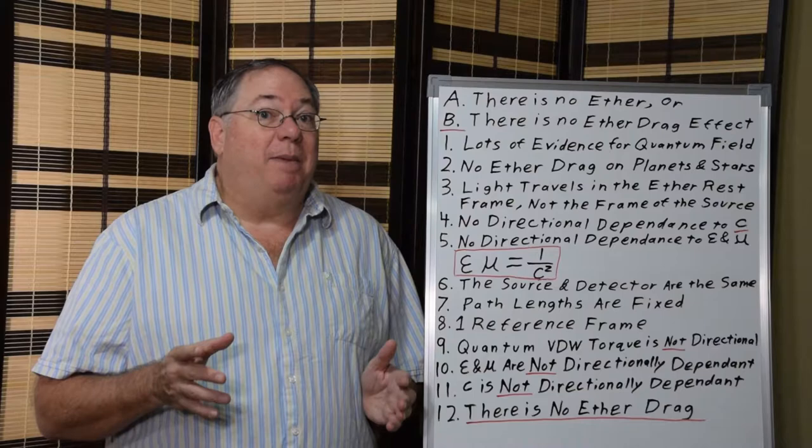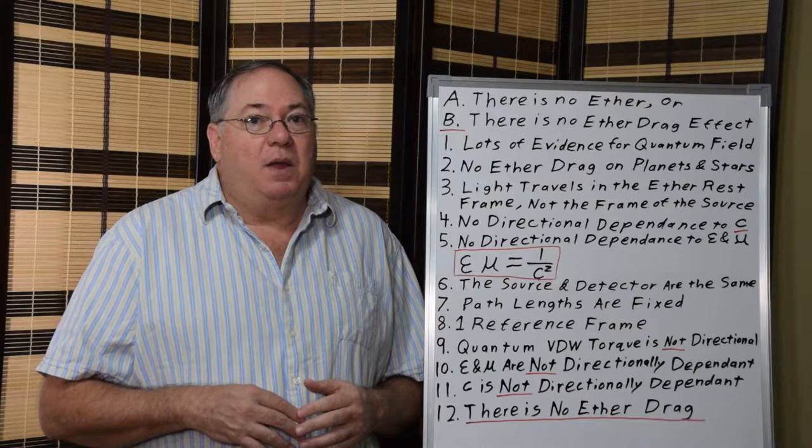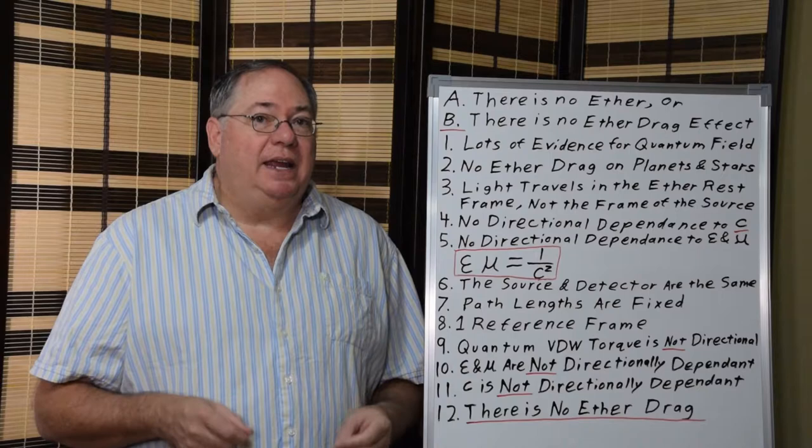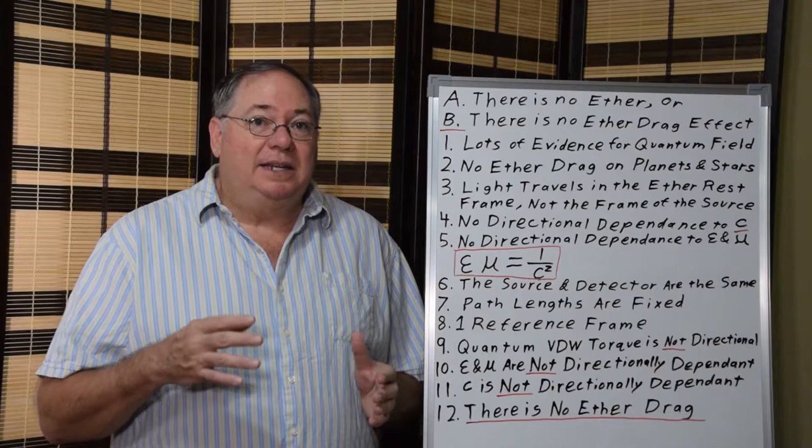And then we can also go back to what's happening electromagnetically to show that light's not affected either. One of the first things we need to understand that was a mistake in the theory and current relativity theory is light travels in the ether rest frame. It travels in the quantum field rest frame.